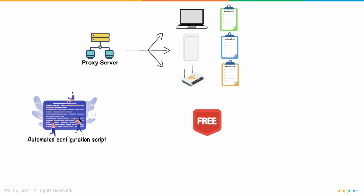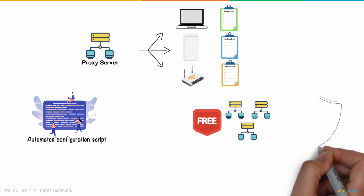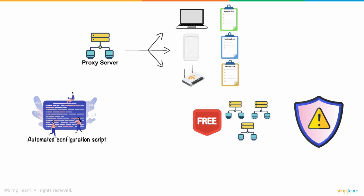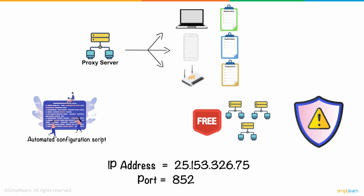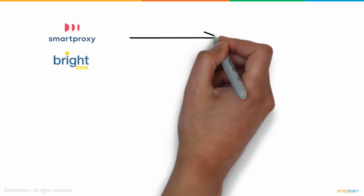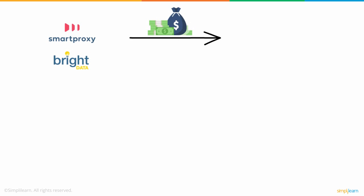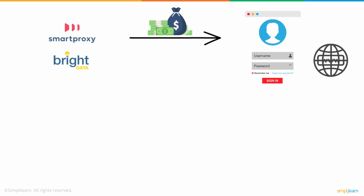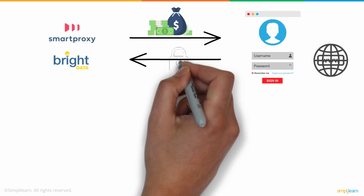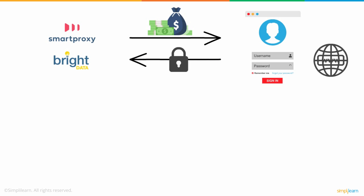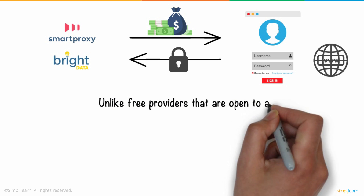There are plenty of free proxy services available on the internet. However, the safety of such proxies is rarely verified. Most free proxies will provide an IP address and a relevant port for connection purposes. Reputed proxy providers like SmartProxy and BrightData that run on subscription models will most likely provide credentials to log in when establishing the connection. This extra step acts as authentication that verifies an existing subscription on the proxy provider server, unlike free providers that are open to all.